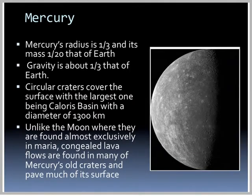Its radius is about a third of the Earth, and its mass is a twentieth of the Earth. Gravity is about one-third of that on the Earth. So our 180-pound guy would weigh about 60 pounds on the surface of Mercury.